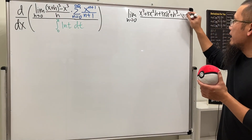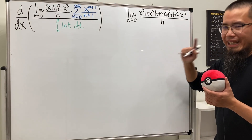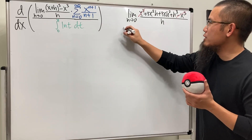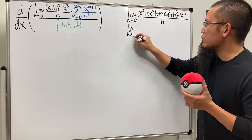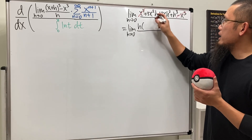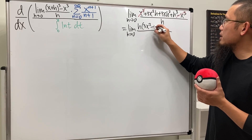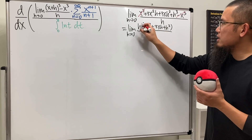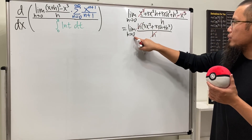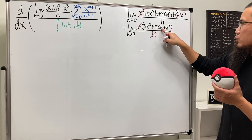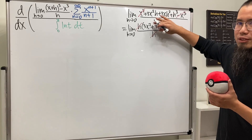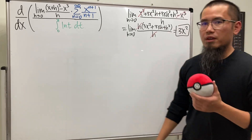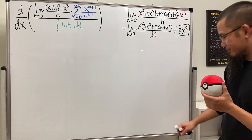Then minus x³, all divided by h. The x³ terms cancel, and we can factor out h on the top. So this becomes the limit as h approaching zero of h times (3x² + 3xh + h²), all divided by h. The h's cancel, and now we can substitute h = 0, leaving just 3x². This is correct — it's the derivative of x³.